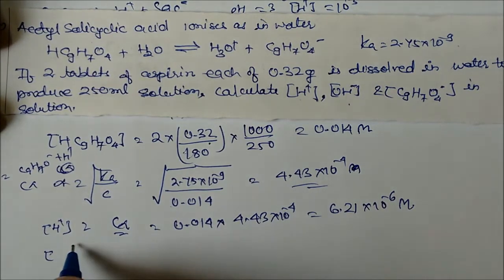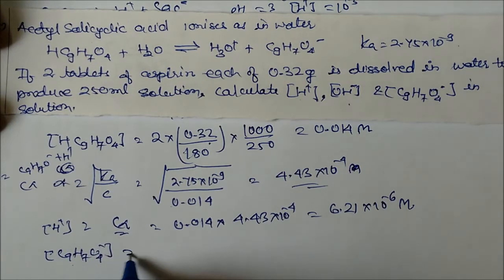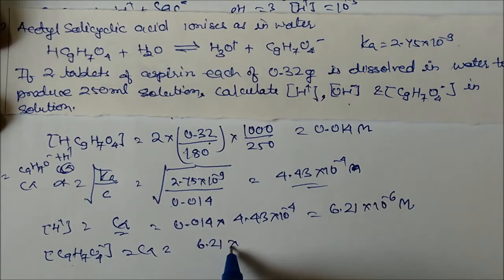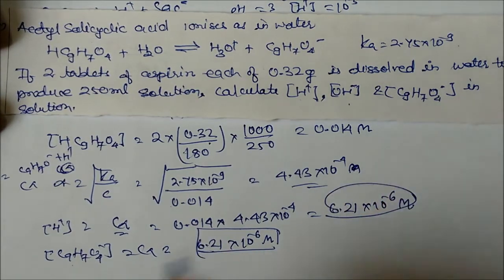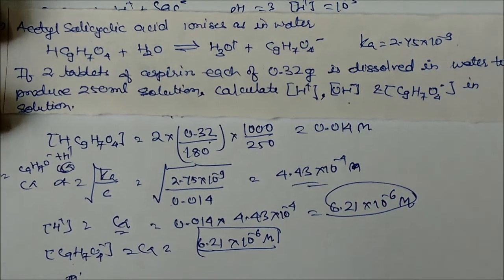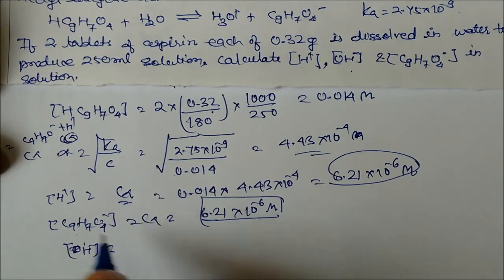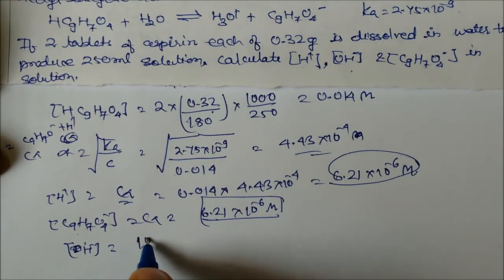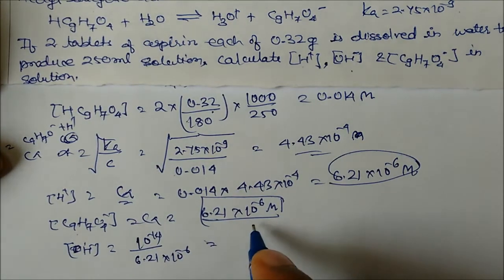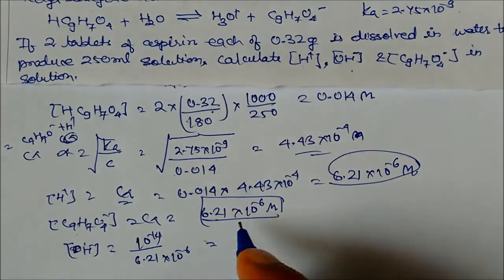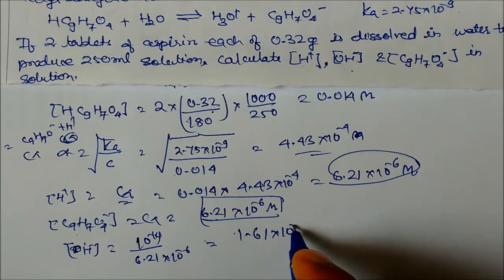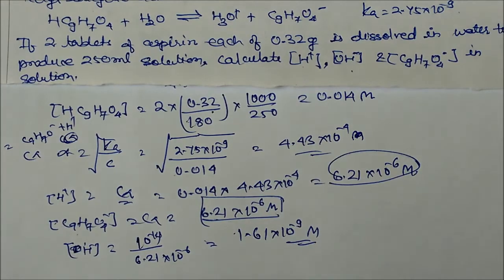Similarly, the concentration of the aspirin anion C₉H₇O₄⁻ = C·α = 6.21×10⁻⁶ molarity (same as [H⁺]). For [OH⁻], we use Kw = [H⁺][OH⁻] = 10⁻¹⁴. So [OH⁻] = 10⁻¹⁴ / (6.21×10⁻⁶) = 1.61×10⁻⁹ molarity. This is the OH⁻ concentration in the aspirin solution.